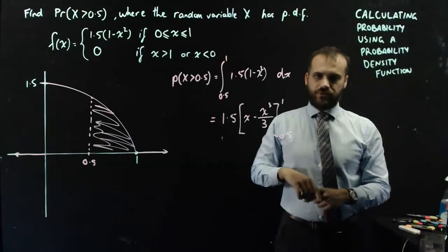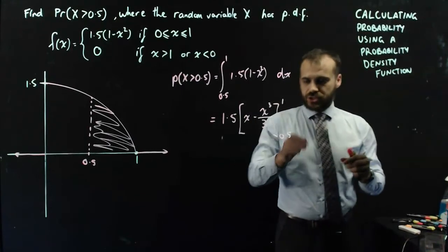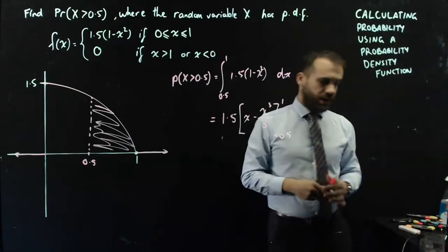So that's the integration of those brackets, and we're going between 1 and 0.5. So now we shove 1 in there, subtract, shoving 0.5 in there, and we'll spit out a number.